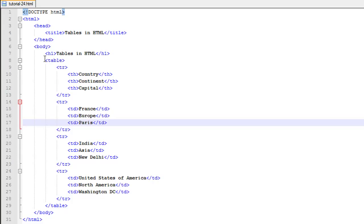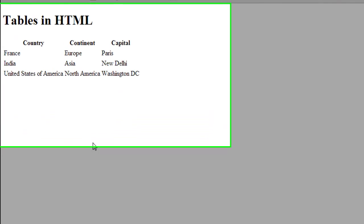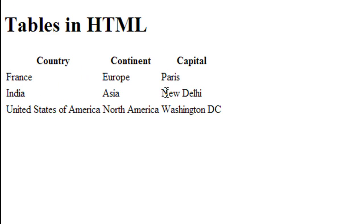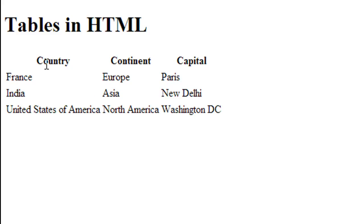This is the first time we're using the table element in this course. Let me show you how this file looks if I open it in Google Chrome. This is how it looks — here is the table we made. Over the next few minutes we're going to talk about how we can improve it, like adding a border and some space between the cells. This is a very basic table — it has Country, Continent, and Capital as headings for the three columns, and it has four rows in total.